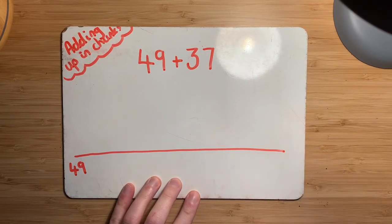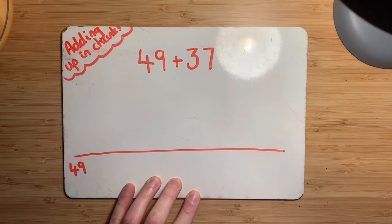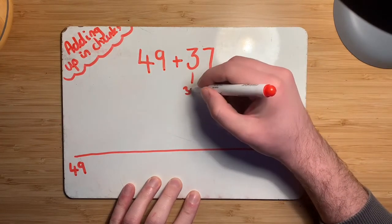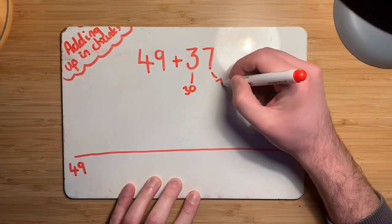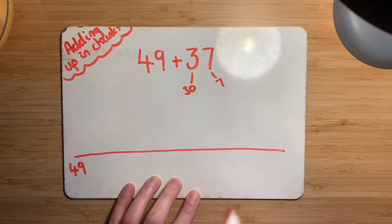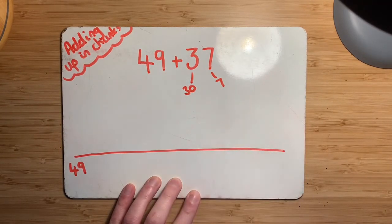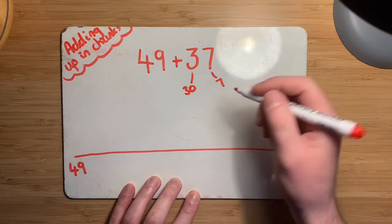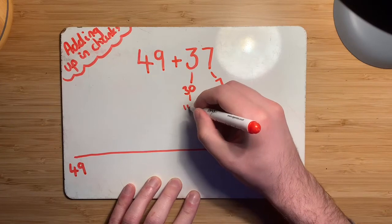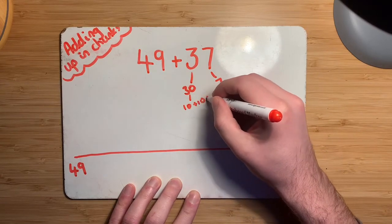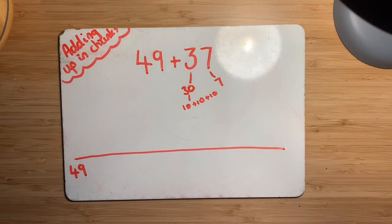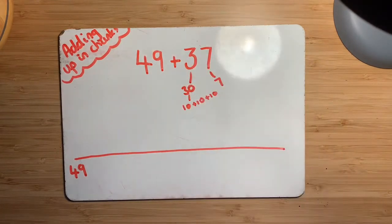But what we did talk about was some people might like to chunk it using place value first. That's maybe a good place to start. So you might want to think about the fact that the three is actually a 30 and the seven is just a little seven on its own. So straight away we've already got it into two chunks. But we also said as well that you could break it down further again if you wanted to. So if you wanted to, you could make the 30 into a 10 plus a 10 plus a 10. Or you could do two 15s, whatever you wanted to do, as long as it still makes up the 30 that it originally was.